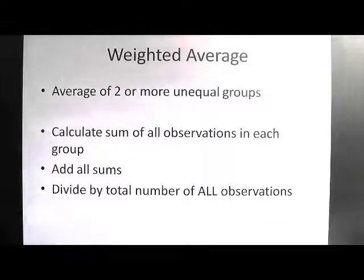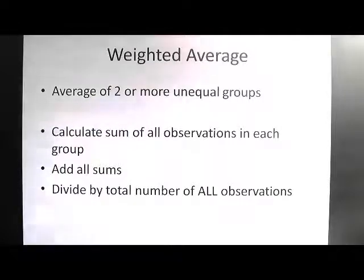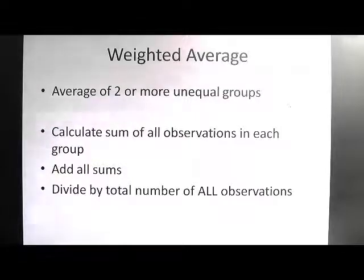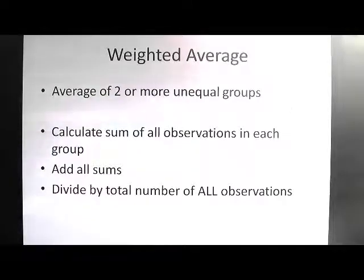In certain cases we need to calculate the weighted average, which is the average of two or more unequal groups. In that case, we calculate the sum of all the observations in every group, add up all the sums, and then divide the total by the total number of all observations.